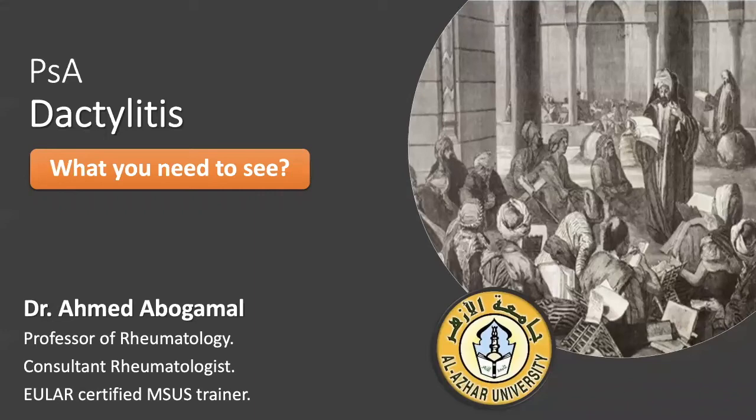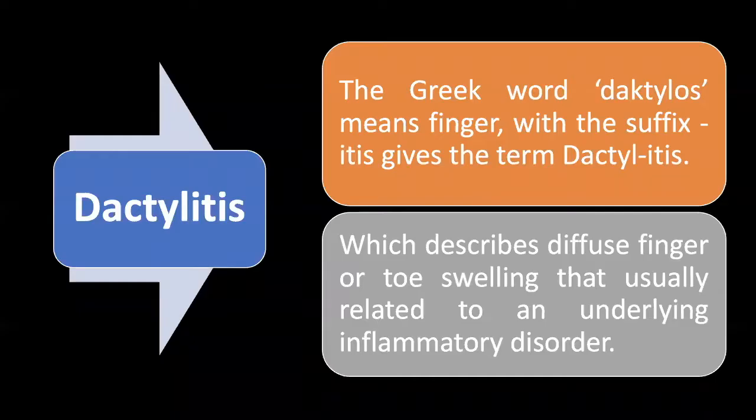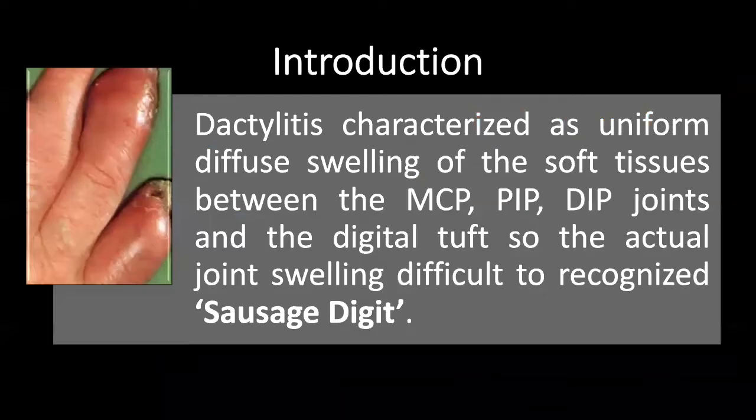Dactylitis — as a word — has two components: a prefix and a suffix. The prefix is 'dactylus,' which means finger or digit, and the addition of 'itis,' meaning inflammation, gives the term dactylitis: inflammation and swelling of the digits, either toes or fingers.